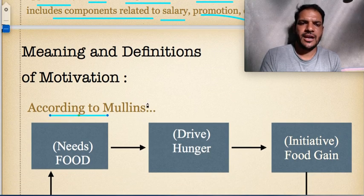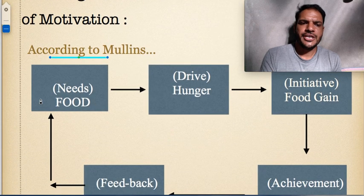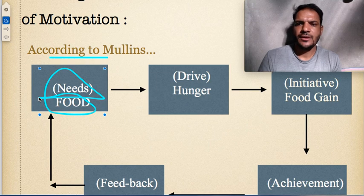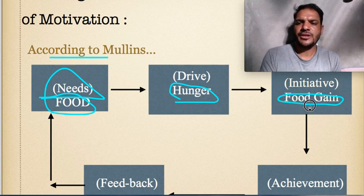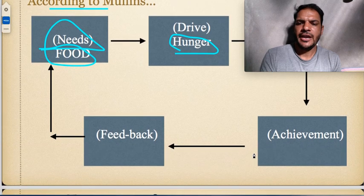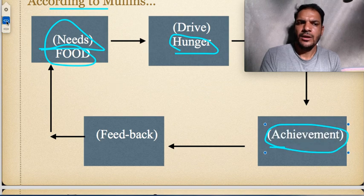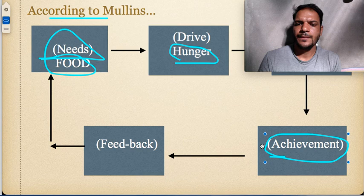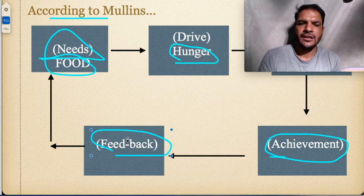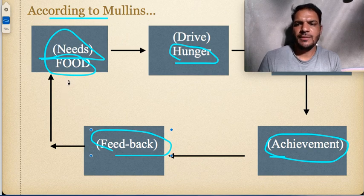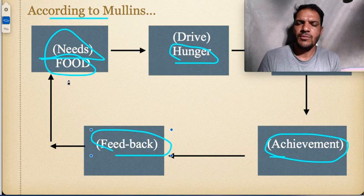In Mullins' diagram, a hungry person's need is food; hunger is the drive, and obtaining food is the initiative. After consuming food, the person's feelings provide feedback, and the motivation process carries on continuously. Motivation is a continuous and endless process — not a single or one-dimensional process.